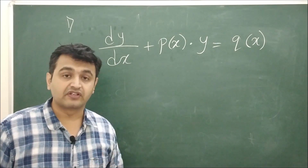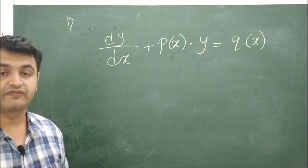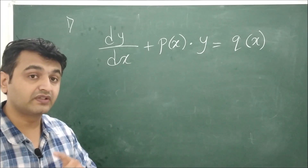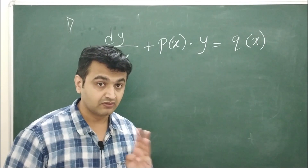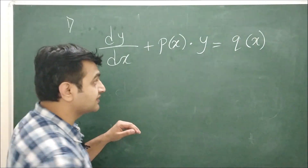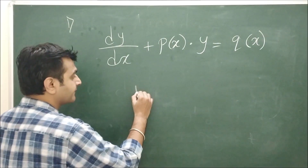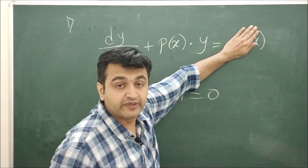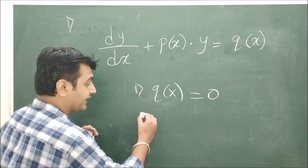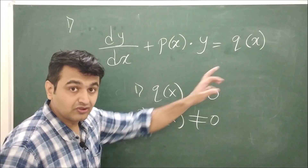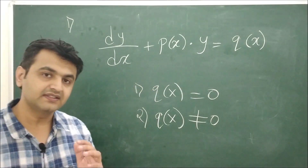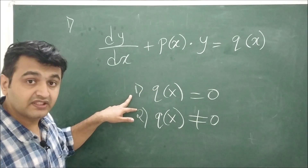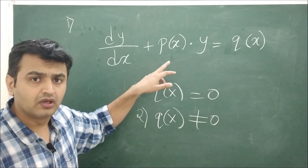There are two types of linear differential equations: homogeneous and non-homogeneous. Do not confuse this with the homogeneous we saw in the third lecture. Here, homogeneous means the right-hand side Q(x) is zero. Non-homogeneous means the right-hand side is non-zero.